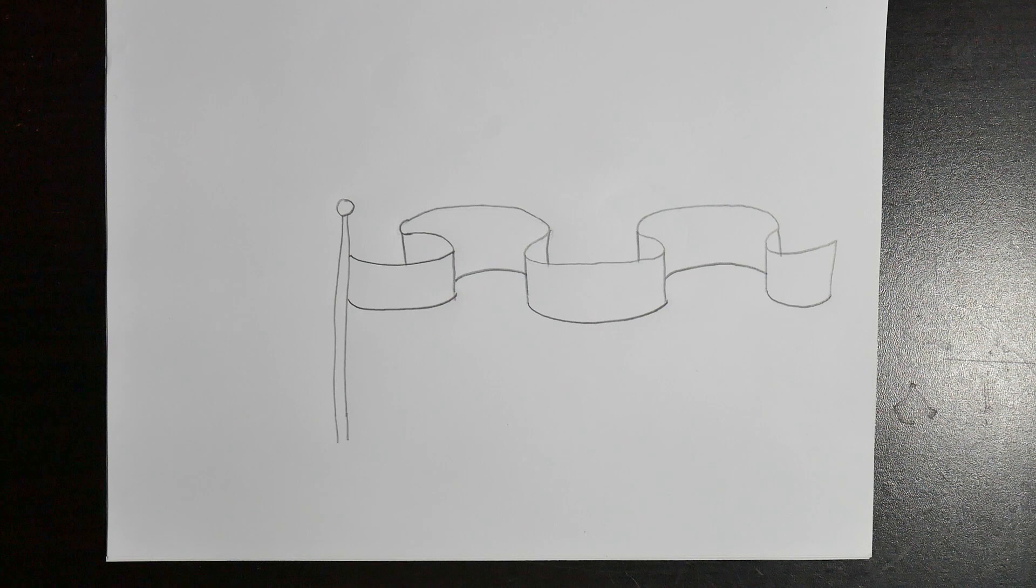So here we see the law of placement. Objects in our background, when they're drawn higher, they appear far away. And objects in the foreground, when they are drawn lower, they appear closer to our eyes.